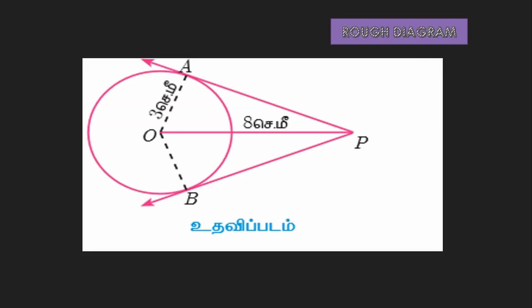Now we have a rough diagram. Where is the diameter? D equals 6 cm. We find the radius: 6 divided by 2 equals 3. So R equals 3 cm.